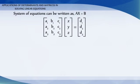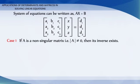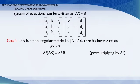Now two cases exist. Case 1: If A is a non-singular matrix, then its inverse exists. That is AX equals B. Premultiplying by A inverse, we get A inverse multiplied by AX equals A inverse into B.